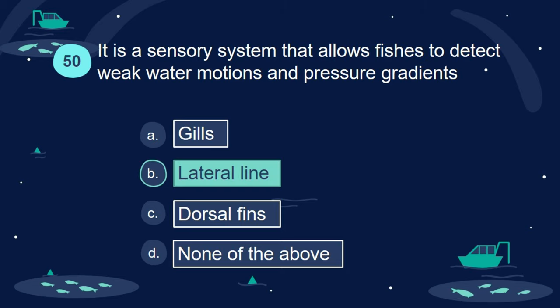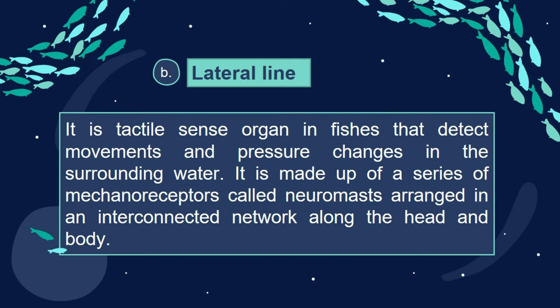Answer: B. Lateral line. It is a tactile sense organ in fishes that detects movements and pressure changes in the surrounding water. It is made up of a series of mechanoreceptors called neuromasts arranged in an interconnected network along the head and body.